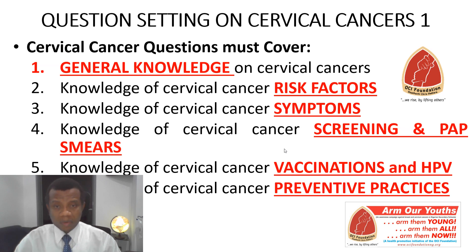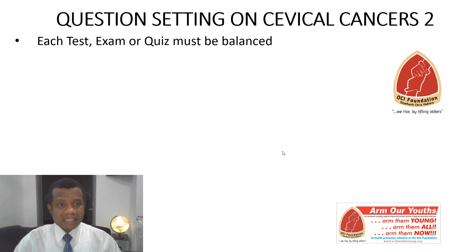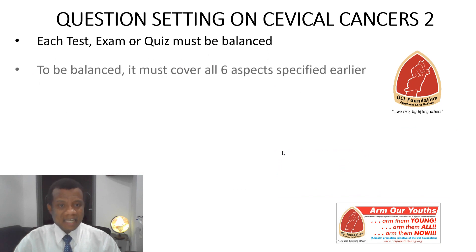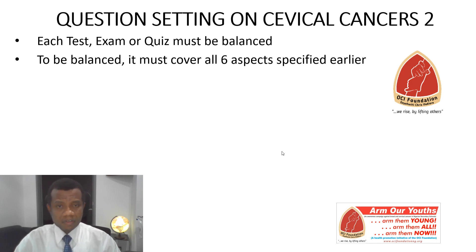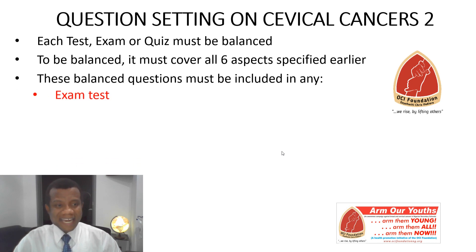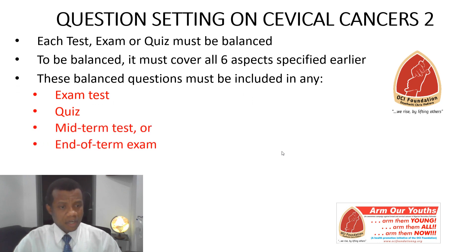It's quite manageable because we have strategies that will make these questions not occupy a lot of space or take a lot of time. Each test, exam, or quiz must be balanced — meaning it must cover all six aspects for cervical cancers. Keep in mind there were five aspects for breast cancers but six for cervical cancers. Every single exam, be it a mid-term test, end-of-year term, or anything at all, must have questions from all of these. You can use true or false questions with a few steps or options, or you can use MCQ.